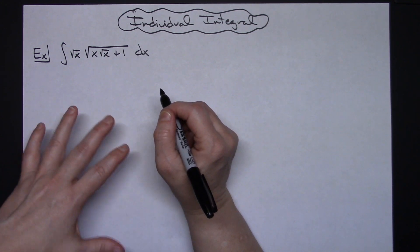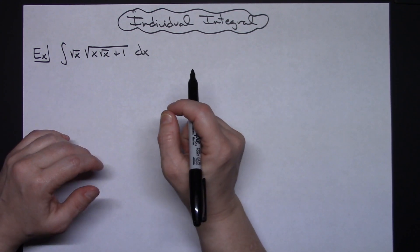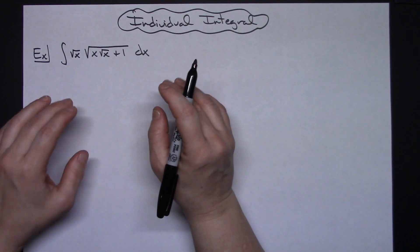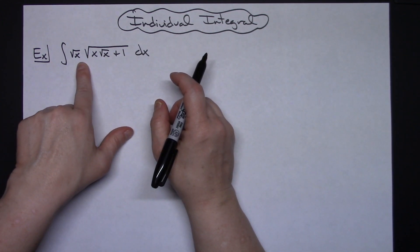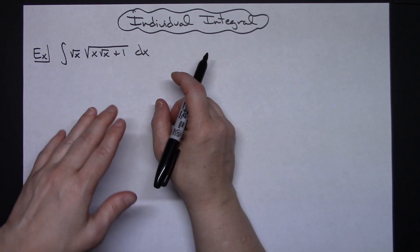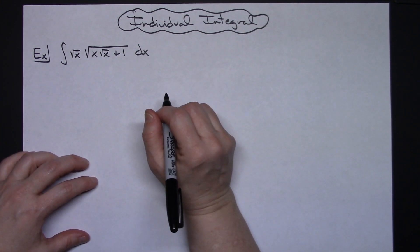Now initially when you first look at this it looks like it's going to be probably a nasty integral, but if we take some time to do some rewriting of this original integral then it's going to turn out to be a straight u substitution when we get done here.